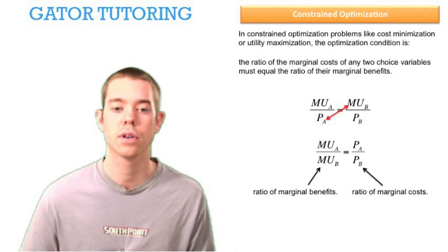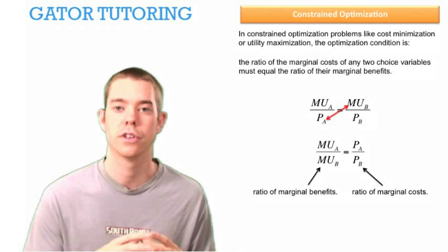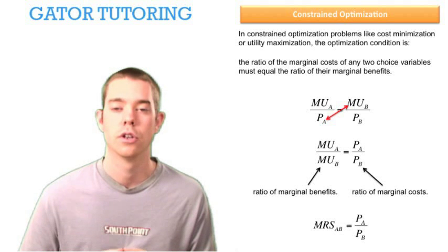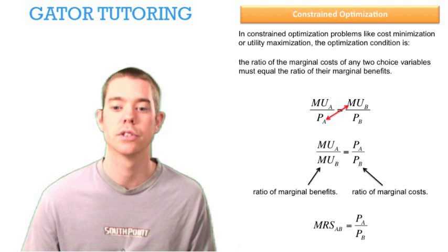Now one thing I want to point out is this thing on the left, the marginal utility of A divided by the marginal utility of B, that's also known as the marginal rate of substitution of A for B. So you just want to make yourself familiar with this because it can show up in a lot of different ways on the test.